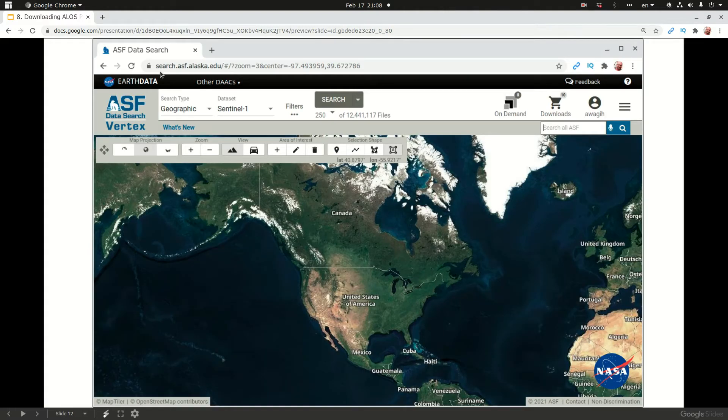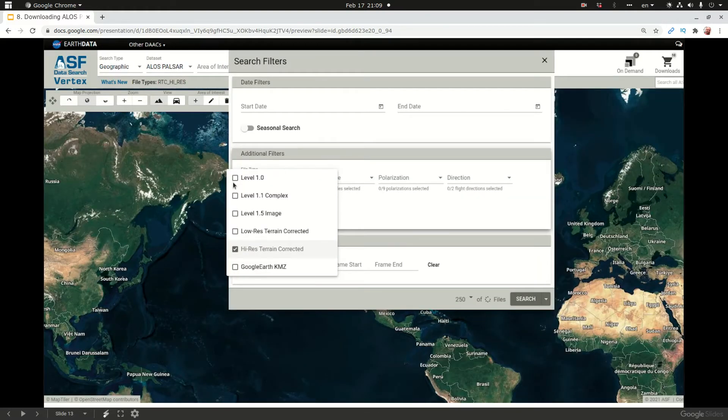You get into the site search.asf.alaska.edu and the thing you have to change here first is the data set. Second, you need to change in the filters, you need to identify the type of data that you're looking for. Third, you need to identify your area of interest. The area of interest can be defined by either pointing using a point, line, polygon, or square.